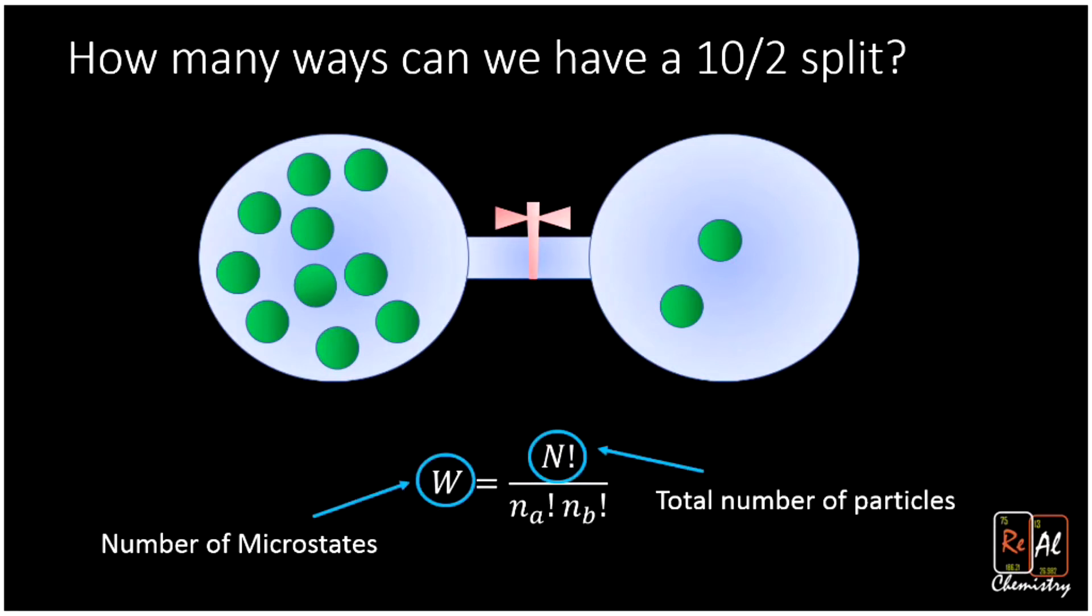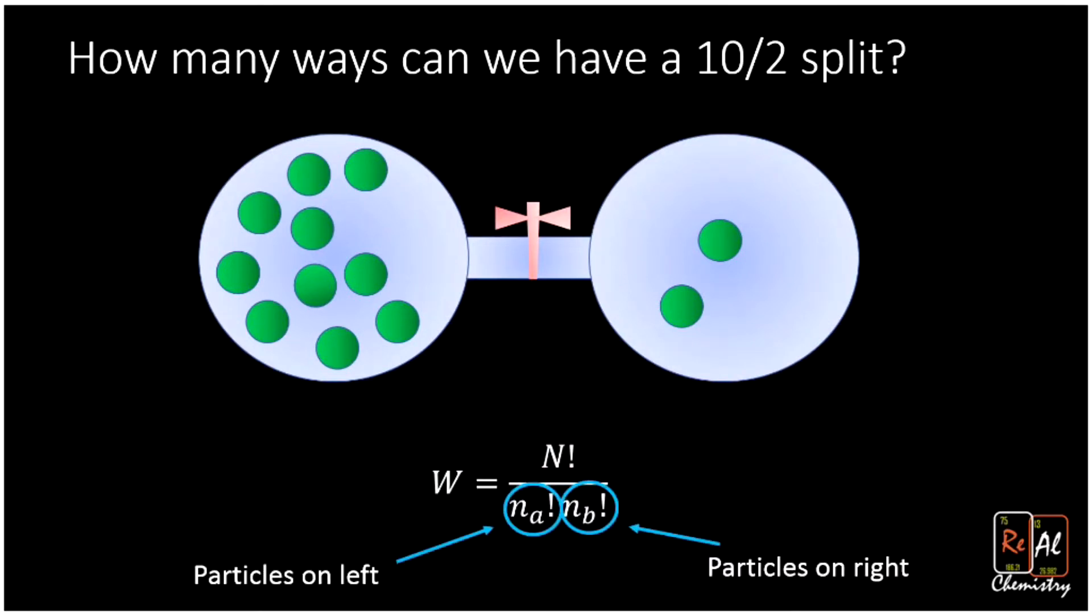This equation tells us that the number of microstates, W, is equal to the total number of particles times this little exclamation mark, which is called a factorial sign. Then we divide that by Na, which is the particles on the left, and Nb, which is the particles on the right. So the only thing I want to explain here now is what does the factorial sign mean? Well, what the factorial sign means is you take the number and you multiply it by 1 minus that number, then 2 minus that number, then 3 minus that number.